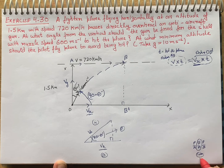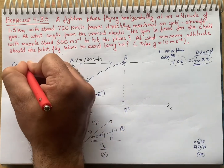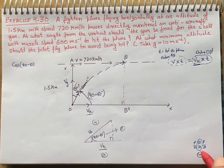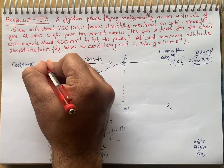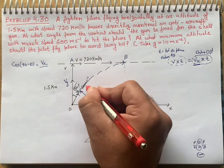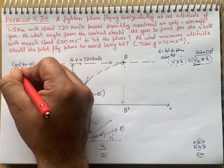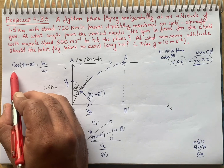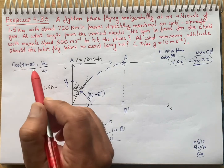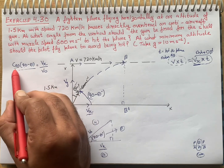To find vx, we need to choose which relation to use among sin, cos, tan. Using the mnemonic 'pandit badri parashad har har bol', since we need the base and we know the hypotenuse, we will choose cos. So we use cos of the reference angle: cos(90 minus theta) = base upon hypotenuse.